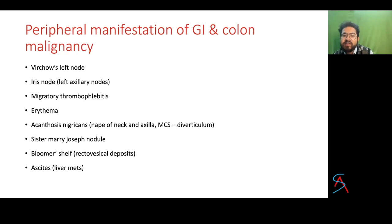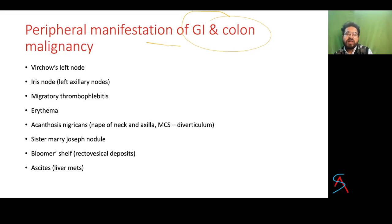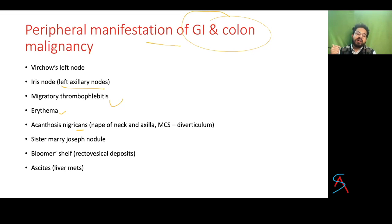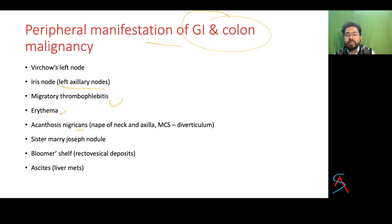Common questions involve peripheral manifestations of GI malignancies. These include Virchow's left supraclavicular lymph node enlargement, Irish node (left axillary lymph node), migratory thrombophlebitis, erythema, acanthosis nigricans (most common site is nape of neck or axilla, commonly seen in GI malignancy), Sister Mary Joseph nodule (deposits around umbilicus), rectovesical deposits, and liver metastasis causing ascites.